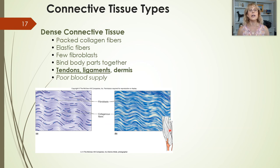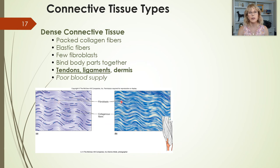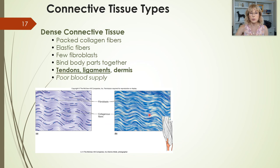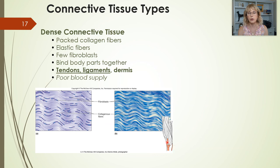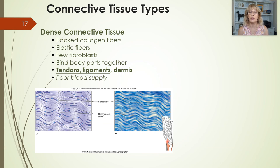Dense connective tissue has really a lot of collagen fibers, and they are organized — all running in the same direction. In a living tendon or ligament, these fibers would be completely straight because there'd be a muscle pulling on one end and a bone on the other. Dense connective tissue does have some elastic fibers — your Achilles tendon and patellar tendon are a little bit stretchy — but they have really abundant collagen because they need to be very, very strong.